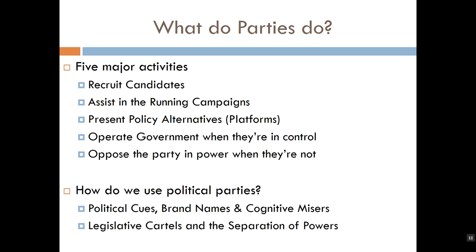We the voters also use political parties to our own advantage. Most importantly, parties serve as a type of political cue — a piece of information that helps a person decide how to vote in an election given very little information about what is actually at stake. The most common type of political cue is the candidate's party ID. Generally speaking, we know Republicans tend to be more conservative and Democrats more liberal.